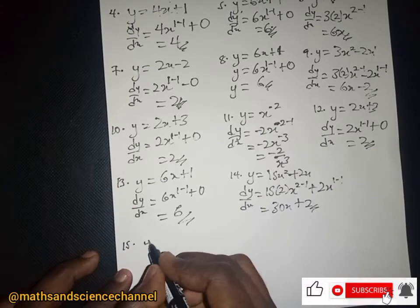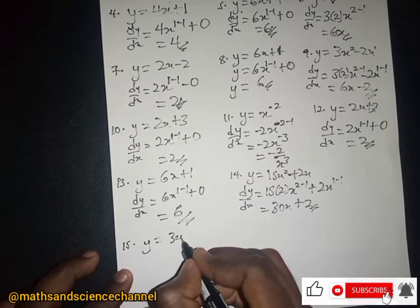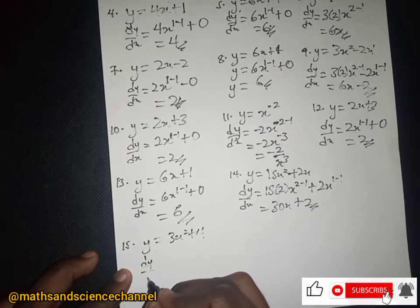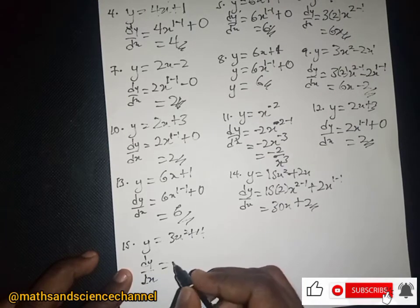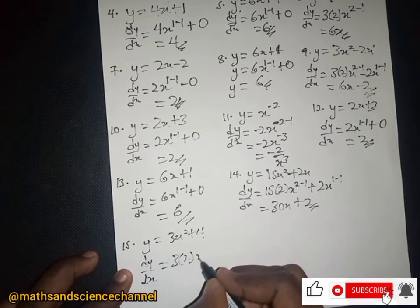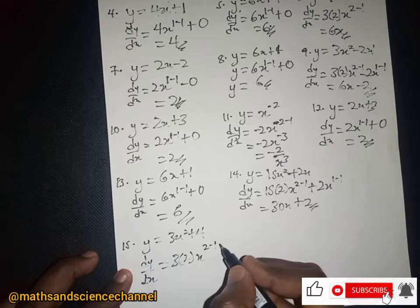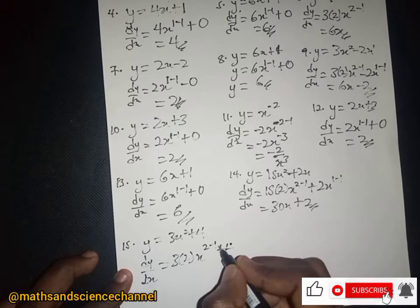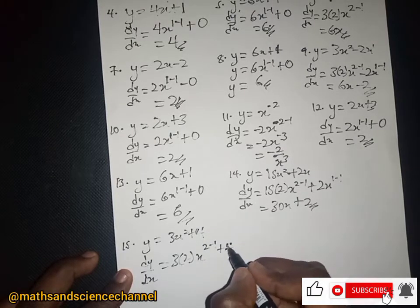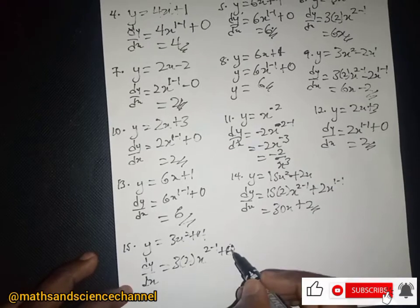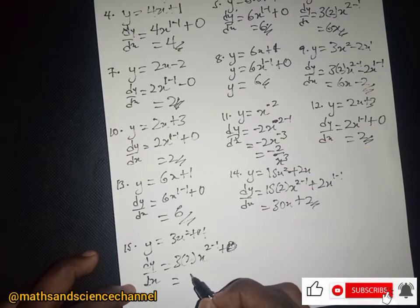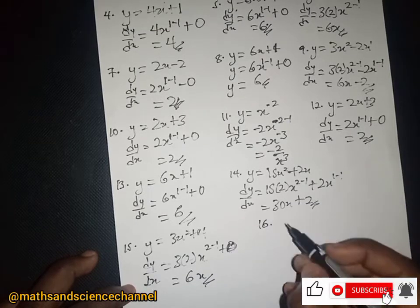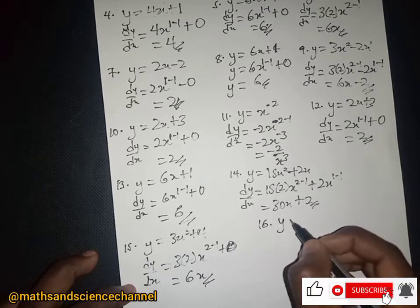Let's say y equal to 3x squared plus 4. The dy/dx will be equal to — 3 multiplied by 2 then x to the power 2 minus 1, plus 4 — we differentiate the constant and just get zero, and therefore we just have 6x.